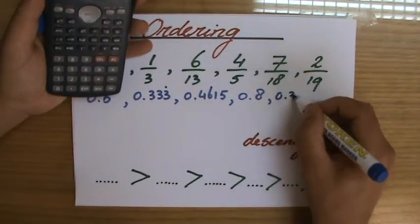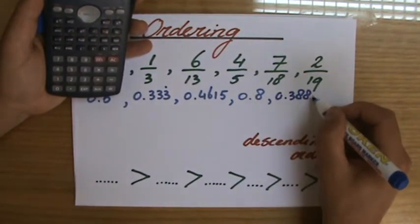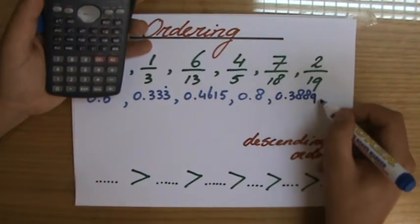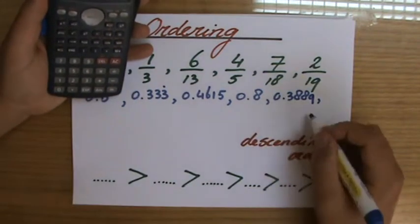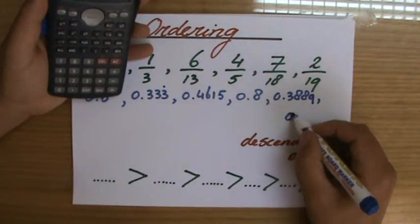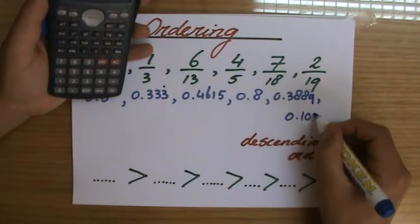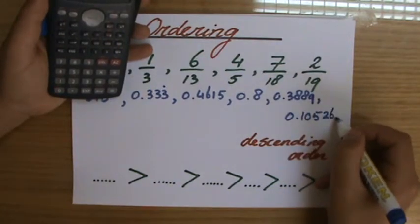0.3888888, so let's put a nine there. And two divided by 19, 2/19, 0.10526 and goes on.